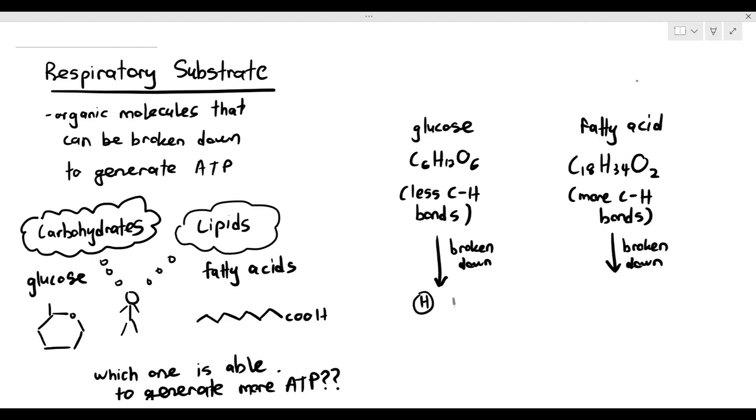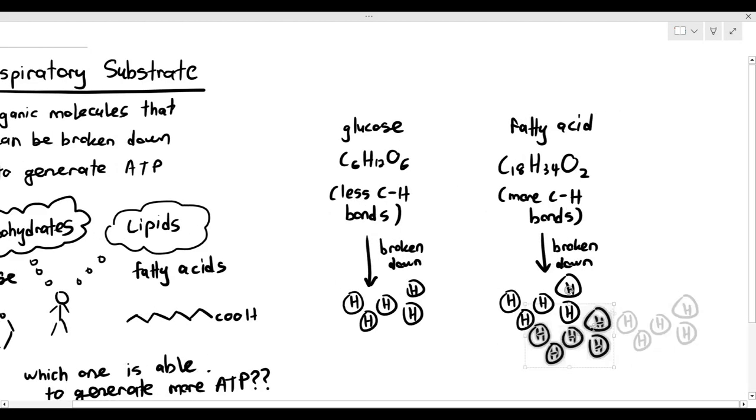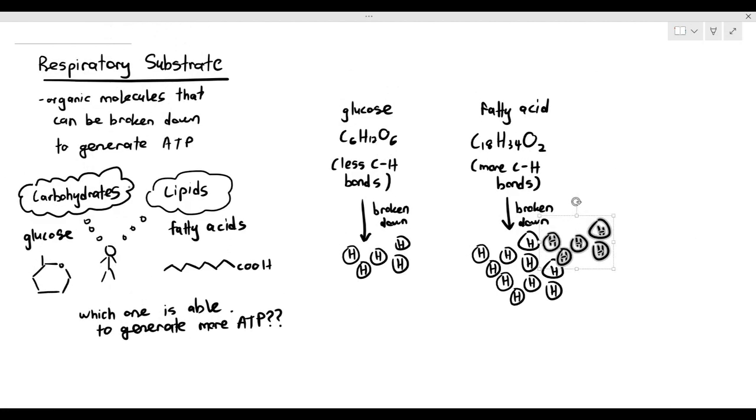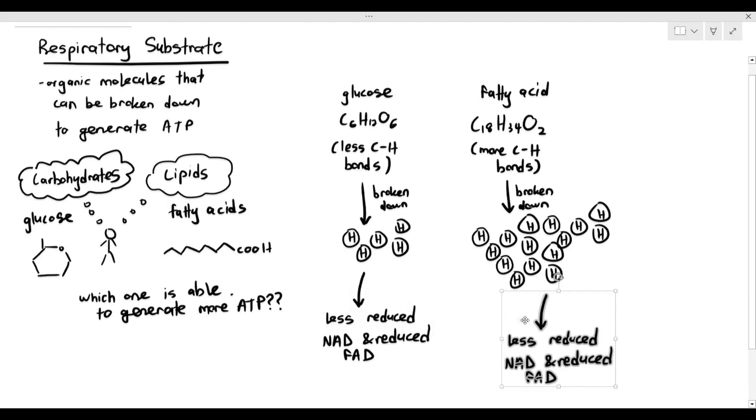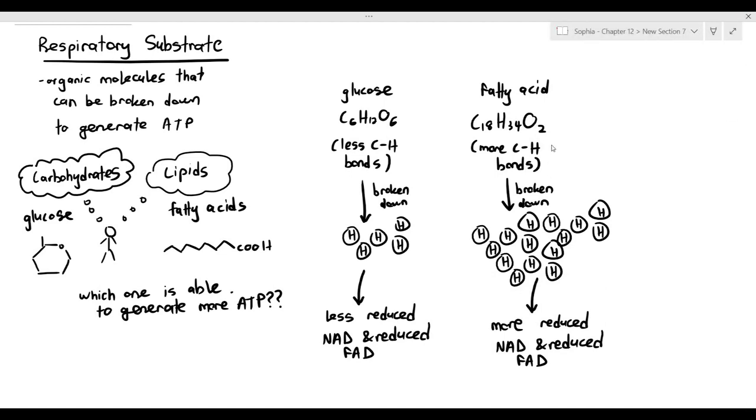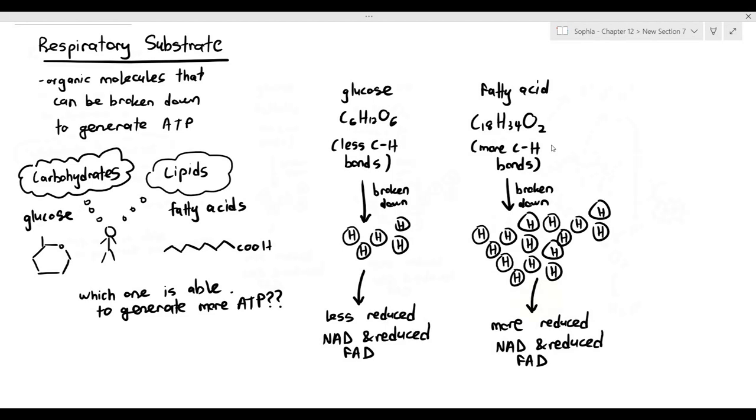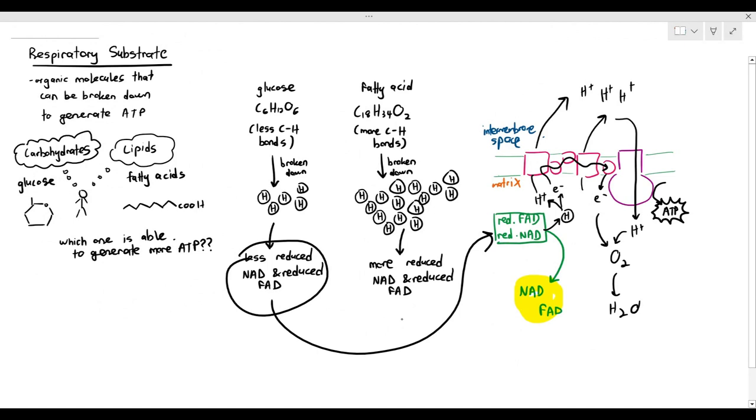When glucose is broken down, it will give you some hydrogen atoms. When fatty acids are broken down from the carbon hydrogen bonds, more hydrogen atoms are released. Based on what we've studied, the hydrogen should be accepted by carriers such as NAD and FAD. Because glucose gives out less hydrogen atoms, it will produce less reduced NAD and less reduced FAD. Conversely, for fatty acids, because it gives out more hydrogen atoms, it will produce more reduced NAD and more reduced FAD.